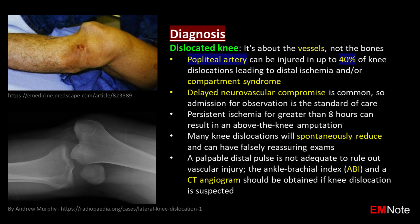Delayed neurovascular compromise is common, so admission for observation is the standard of care. Persistent ischemia for greater than 8 hours can result in above-the-knee amputation. Many knee dislocations spontaneously reduce and can have falsely reassuring exams — a palpable distal pulse is not adequate to rule out vascular injury. The ankle-brachial index and CT angiogram should be obtained if knee dislocation is suspected.